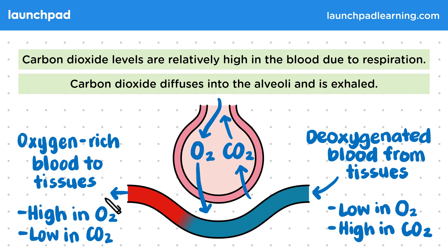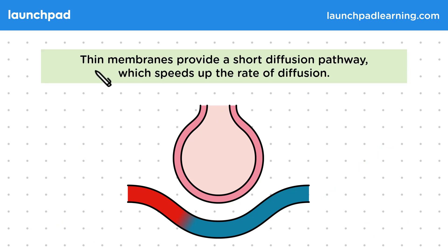So now you understand a bit more about the gas exchange that occurs in the lungs, but how are these surfaces adapted for gas exchange? Thin membranes provide a short diffusion pathway, which speeds up the rate of diffusion.